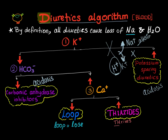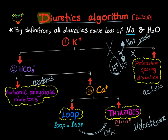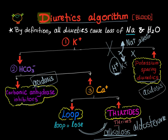Now let's look at loop diuretics and thiazide diuretics. These diuretics will lead to loss of sodium and water in urine. Then aldosterone will respond — and what does aldosterone do? Secretion of hydrogen ions, which are acidic, so the result is alkalosis. Both loop diuretics and thiazide diuretics will lead to alkalosis. To recap: carbonic anhydrase inhibitors — acidosis; potassium-sparing diuretics — acidosis; both loop and thiazide diuretics — alkalosis.